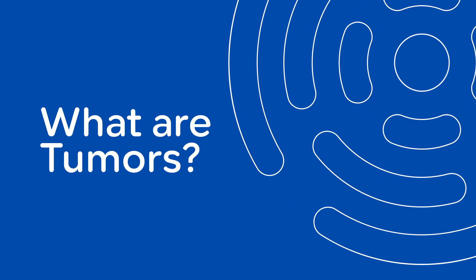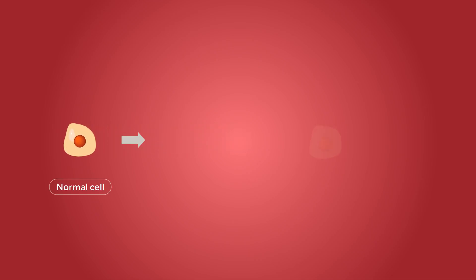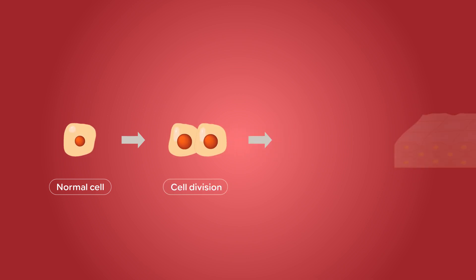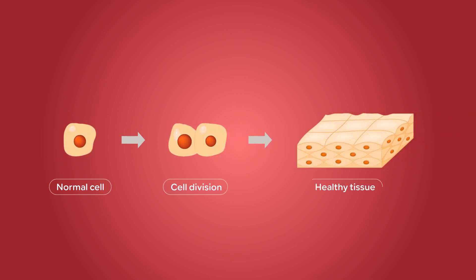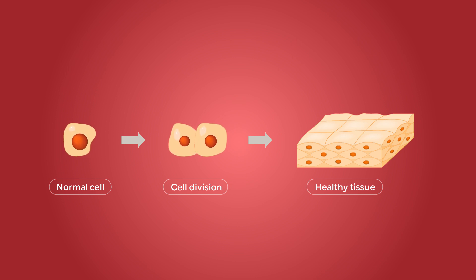What is a tumor? A tumor is a mass or lump that forms when cells in a specific part of the body grow and multiply uncontrollably. Tumors are also called neoplasms, and you may hear your doctor use both terms interchangeably.